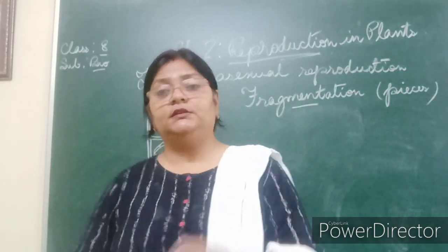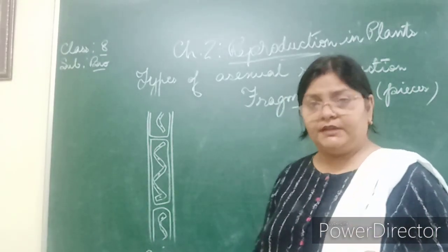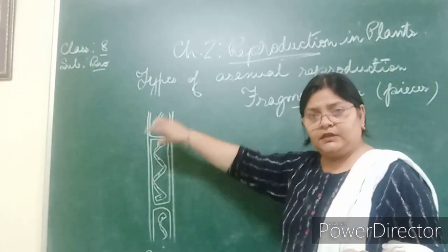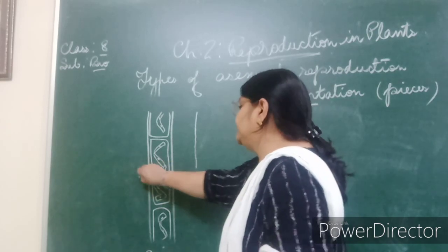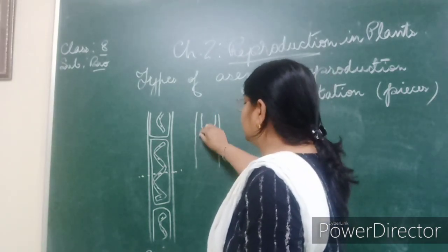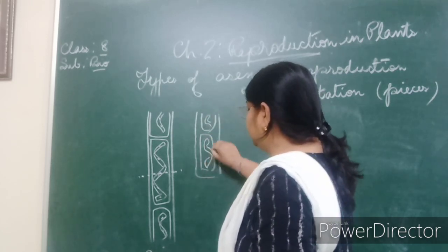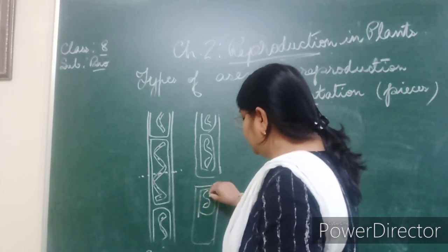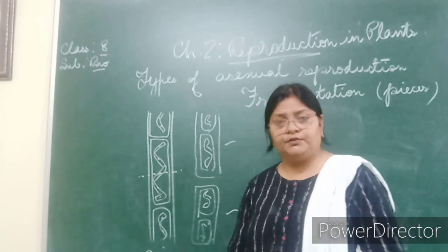The example of fragmentation is Spirogyra, a green algae. Some mosses or liverworts can also show fragmentation. Spirogyra is a green algae having chlorophyll in it and is ribbon-like or filamentous in structure. By any reason — maybe a water current — if the organism gets broken into two pieces, each broken piece will grow into a new individual. This gives us two daughter organisms produced from fragments.